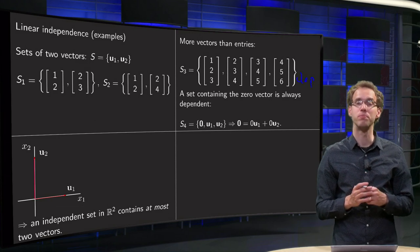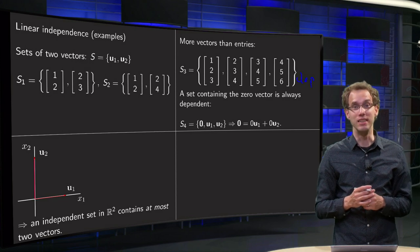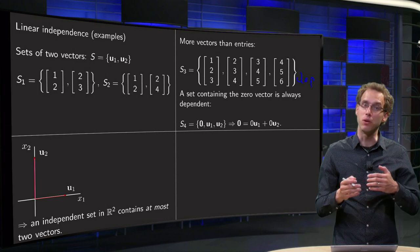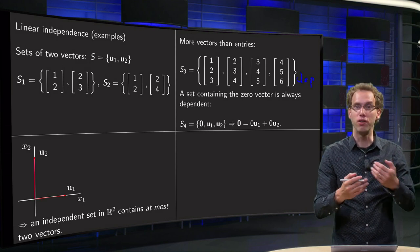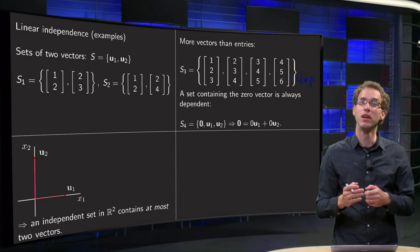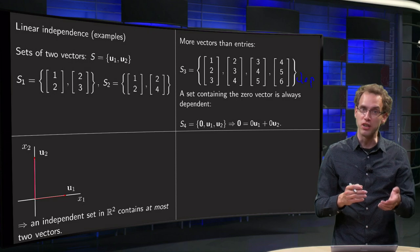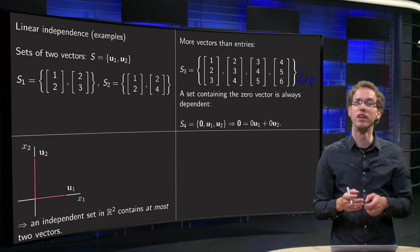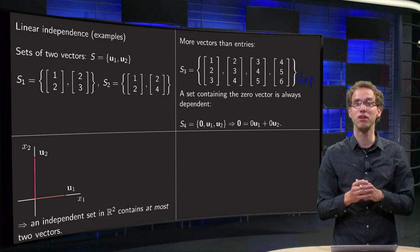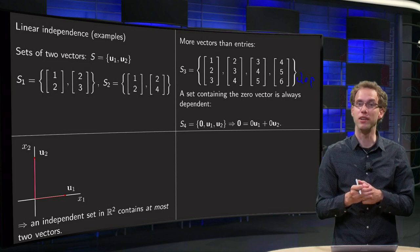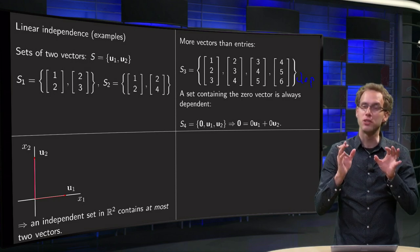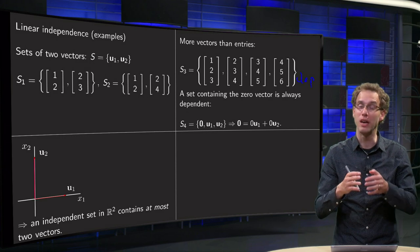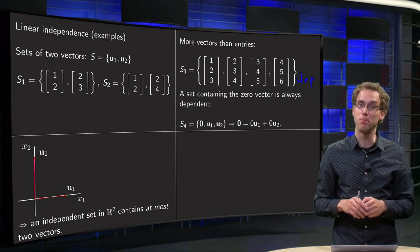Any set containing the zero vector is automatically dependent, because you can always write the zero vector as zero times U1 plus zero times U2, expressing it in terms of the other vectors. Even the silly set consisting of only the zero vector is also linearly dependent — for that you can use the definition. So a set containing the zero vector is always dependent.